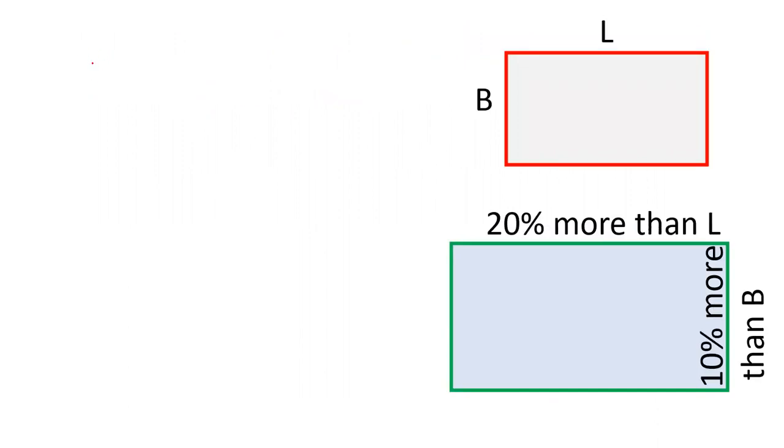Initial length and breadth are given as L and B. Initial area of rectangle is length into breadth. So area of this rectangle is length into breadth.